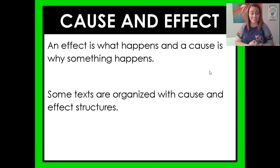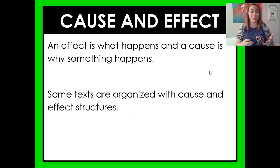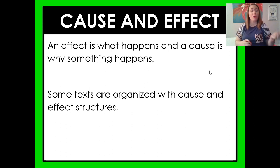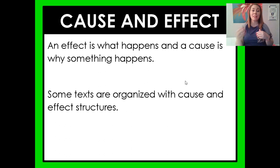So let's talk about cause and effect. An effect is what happens, and a cause is why something happens. A cause is why something happens, and the effect is what actually happened. Some texts are organized with cause and effect text structures — when the author is saying "this happened and this is why, and then this happened and this is why." That's a cause and effect text structure.